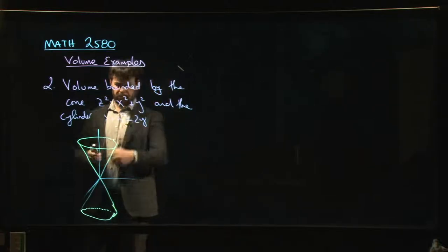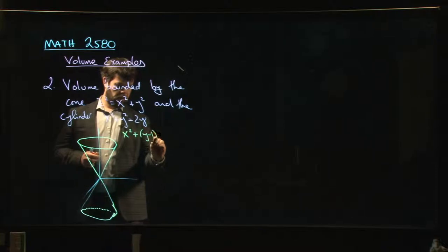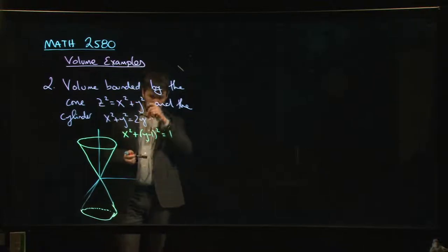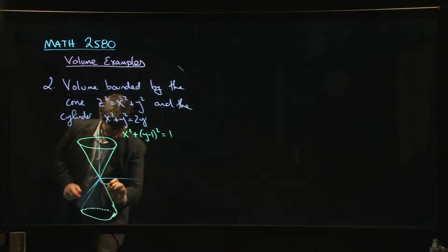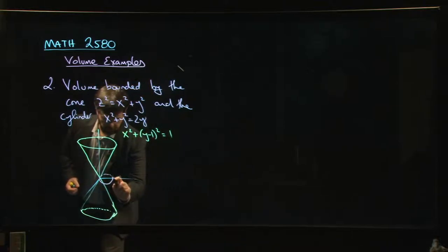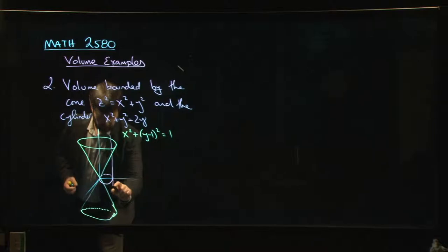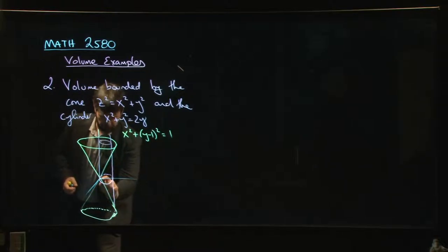What about this cylinder? Well, first of all, let's complete the square on this thing. What we actually have here is x squared plus (y minus 1) squared equals 1. So that's the equation of a circle, but it's a circle that's been shifted one unit along the y axis. So we have this circle here, and that circle is going to extend up and down like so. It's a cylinder. There's our cylinder.